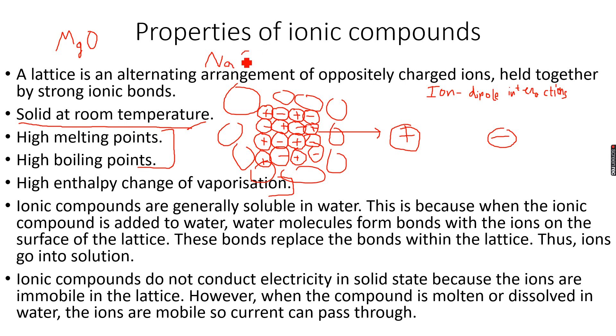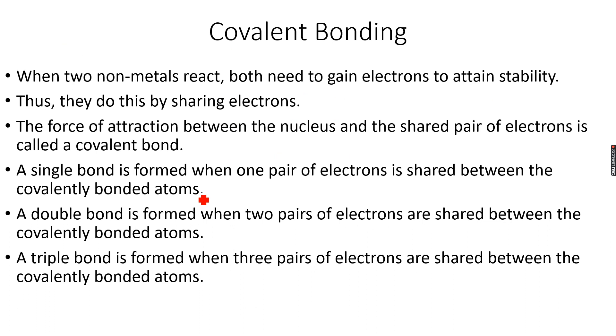NaCl is basically Na+ and Cl- with a charge of one each, but MgO is Mg2+ and O2- with higher charges. So the ionic bond is stronger in the case of MgO. Now after ionic compounds, we move on to covalent bonding.